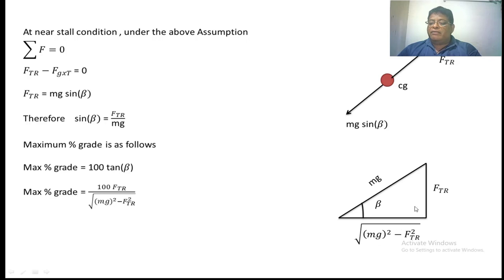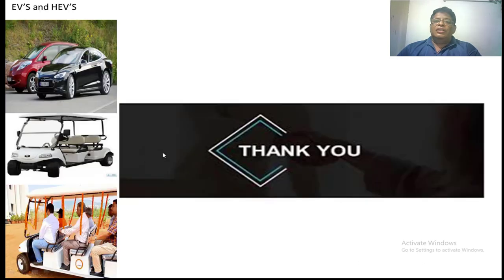Using a right triangle relating the gravitational force and Ftr, the length of the base becomes √(Mg² − Ftr²). Therefore tanβ equals Ftr divided by √(Mg² − Ftr²), and maximum percentage grade equals 100 times tanβ. Thank you very much. If you have any doubts, you can ask me directly or in the comment box on my YouTube channel — I am always welcome to answer your questions.